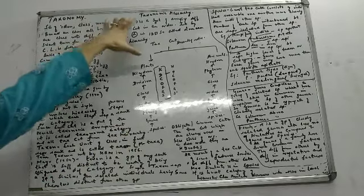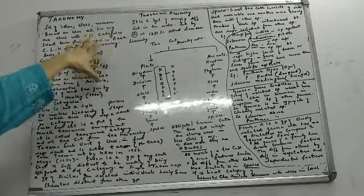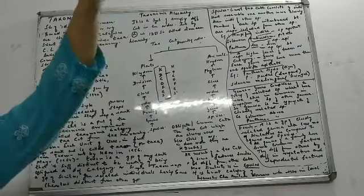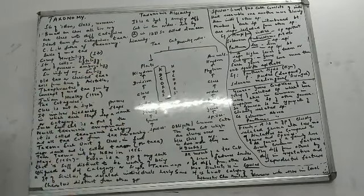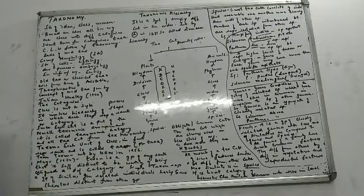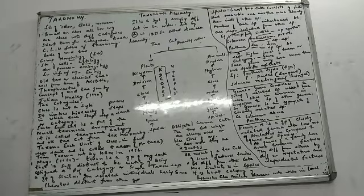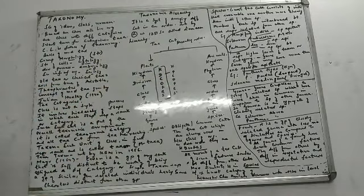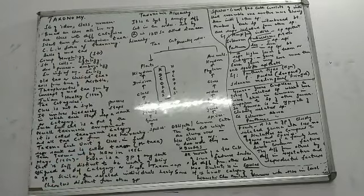Taxonomic hierarchy is a system of arranging all the taxons or categories in a proper order or sequence. Since it was introduced by Linnaeus in 1751, this system is also known as Linnean Hierarchy. It was Linnaeus who first tried to put all the different categories in a stepwise hierarchy.